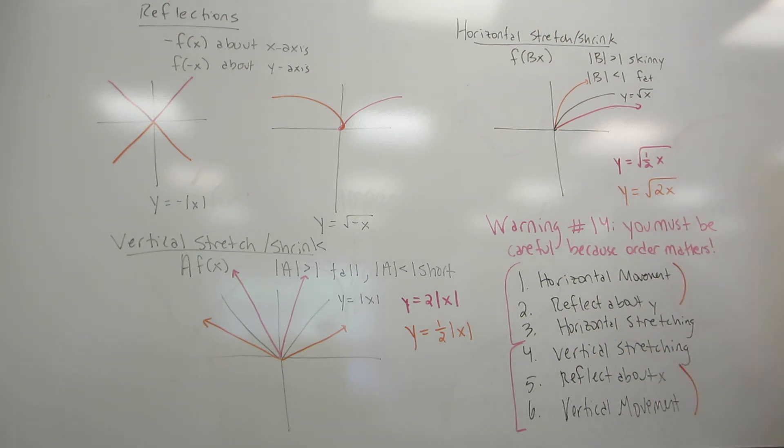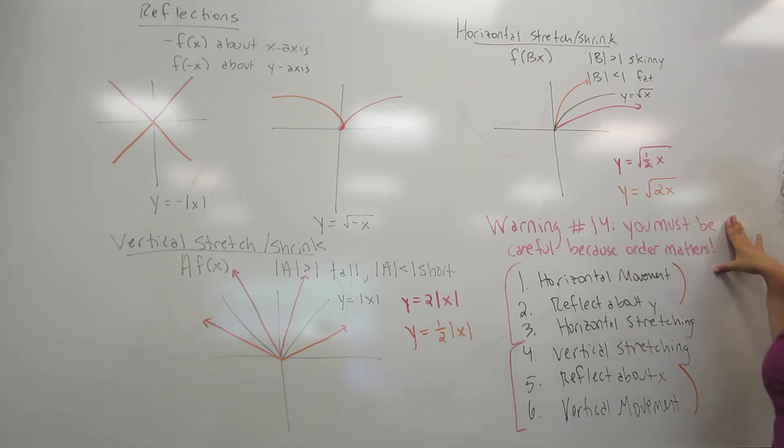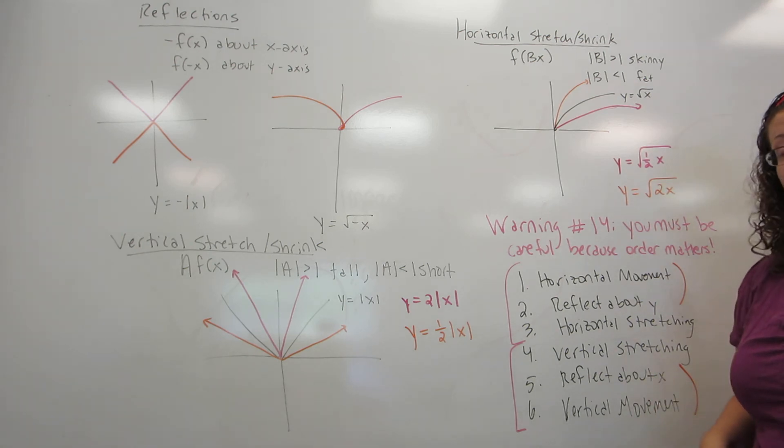Now the last thing we want to discuss is how to do more than one of these on the same problem. I have to warn you here. This is warning number 14. You must be extremely careful which order you do these transformations in. It doesn't always matter, but there are cases where it matters. So I'm going to give you my preferred list of which order I would do these in. Now there are six possible transformations. Chances are you're not going to have to do more than one or two.